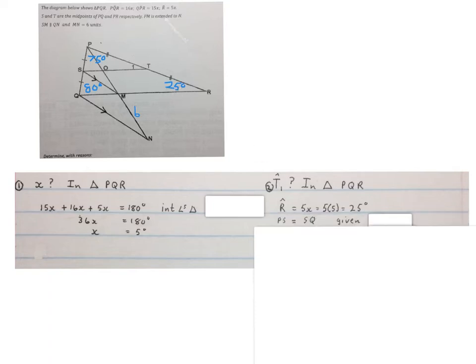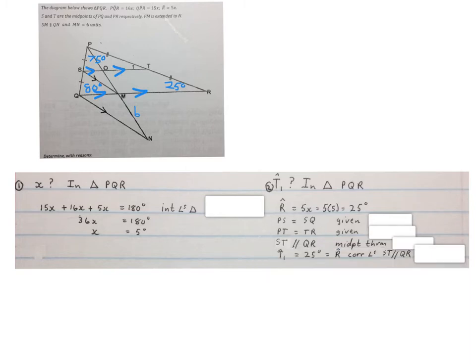Then we write PS is equal to SQ, given. They indicated it on the sketch for us. PT is equal to TR, also given on the sketch. Then we can write ST is parallel to QR because of the midpoint theorem. Therefore T1 is also 25 degrees, equal to that R. They are corresponding angles because ST is parallel to QR. Please stop the video and get your brain around these two solutions.